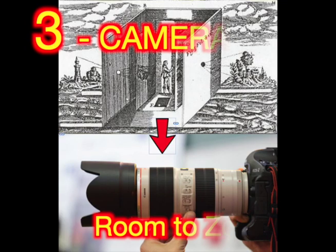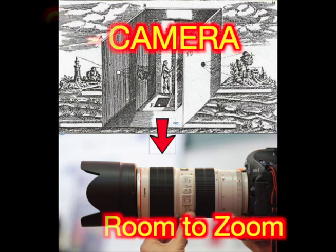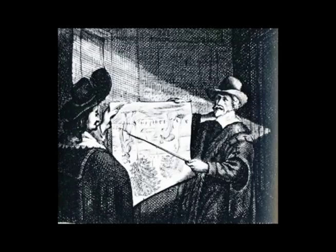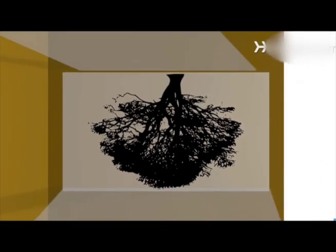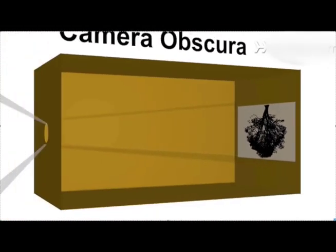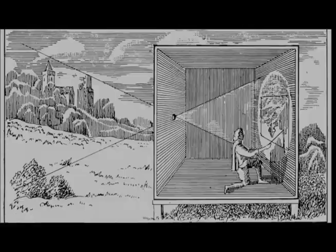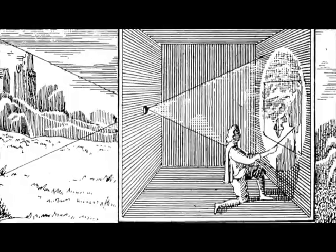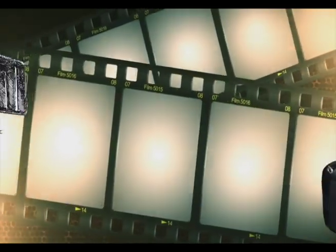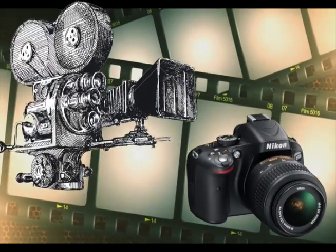3. Camera room to zoom. Romans use lenses to shine light through a hole into a dark room. This makes an upside-down picture on the wall. Later, these lenses show pictures on a box. Artists use the boxed images to make outlines for their paintings. Next, film and cameras are invented.